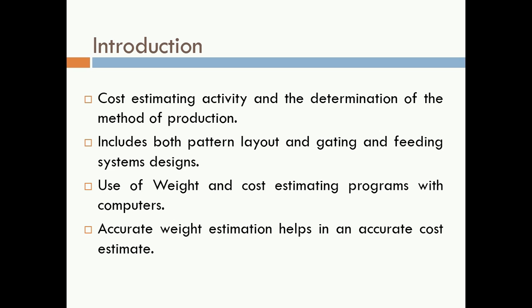Cost estimating activity includes determination of the method of production. We can estimate the cost of molding sand, core sand, the molding operation, and the molten metal. We can also determine the method of production — whether the casting can be manufactured by green sand molding, shell molding, CO2 molding, investment casting, pressure die casting, gravity die casting, centrifugal casting, or continuous casting.